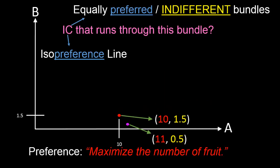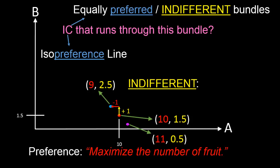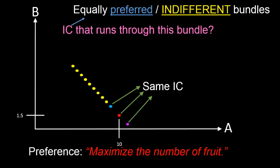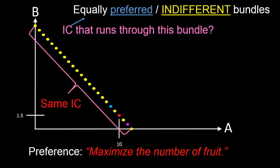What's another example of a bundle on the same indifference curve? Suppose we started again at the red bundle, gave Chris one additional banana but took away from him one apple, so that he was on the blue bundle — 9 apples and 2.5 bananas. Since Chris cares only about his total number of fruit, he's exactly as happy as before — indifferent about being on the blue or red bundle. So the blue bundle is on the same indifference curve. If we keep repeating this exercise, giving Chris an additional banana while taking an apple, or vice versa, we trace out a whole sequence of yellow bundles that all lie on the exact same indifference curve.